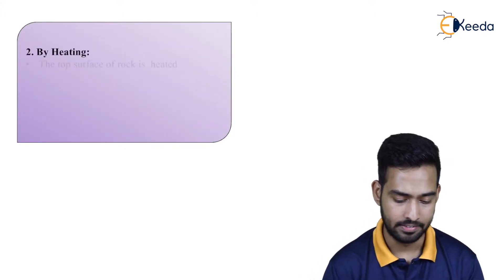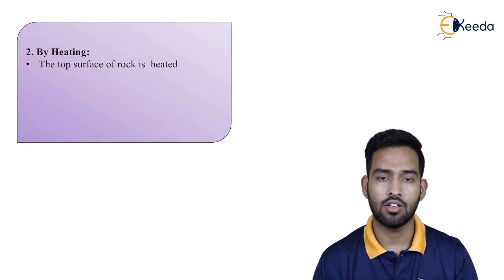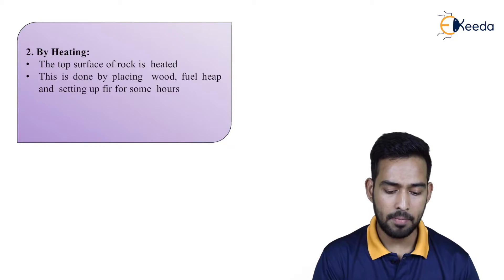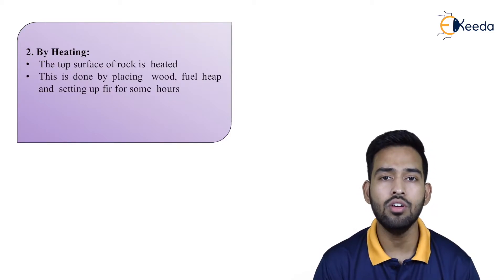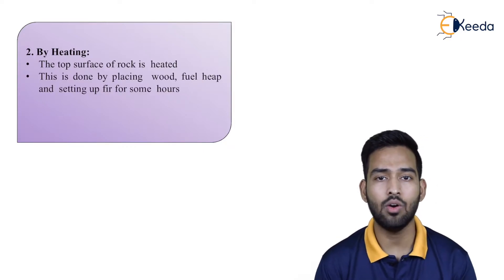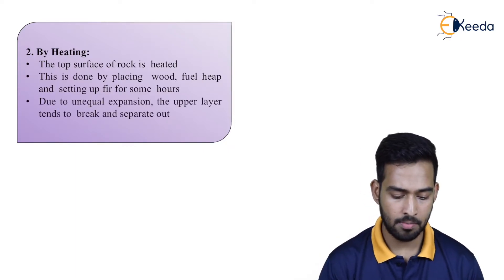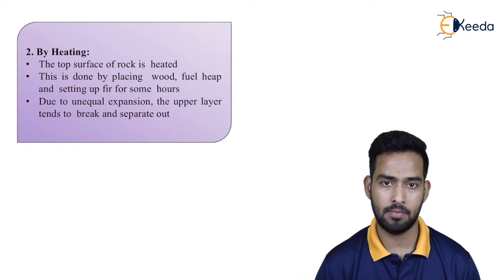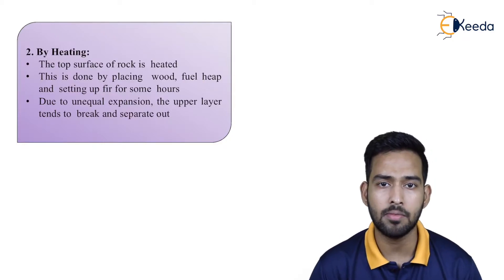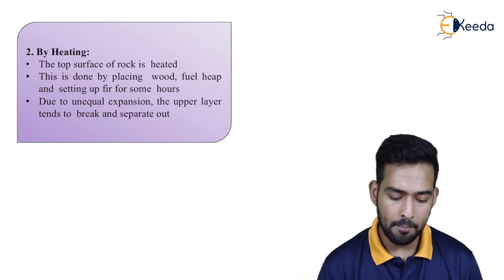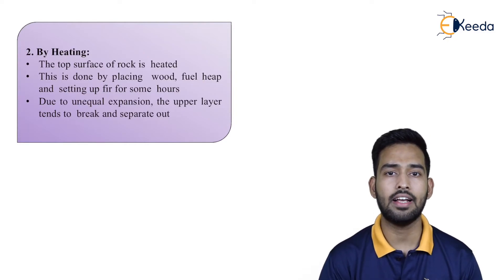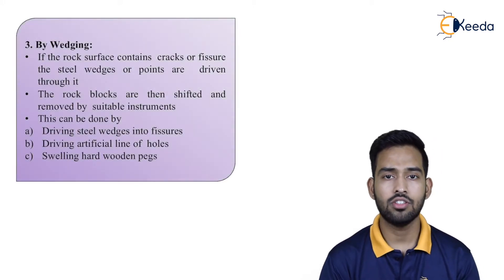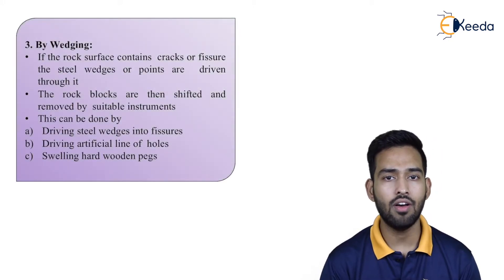The next hand tool method is heating. The top surface of the rock is heated by placing wood or fuel and setting fire for some hours. Because of this, unequal expansion takes place — the expansion of the rock is uneven. The upper layer then tends to break and separate out, so the layer underneath becomes available for extraction.